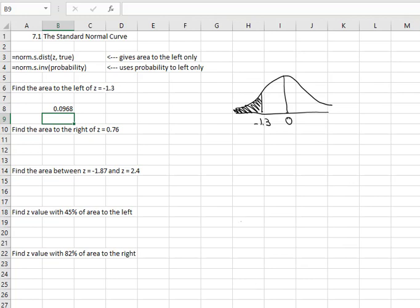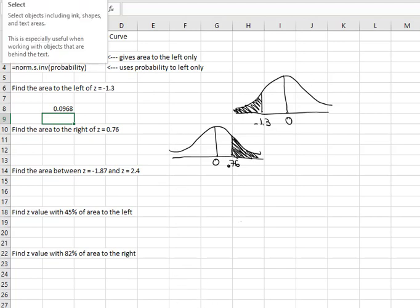Now that's a little different than the next example where I want to find the area to the right of 0.76. So here's my normal curve that I'm sketching on some scratch paper. Zero's in the middle, 0.76 is off to the right of that because it's positive. And I want the area to the right of that z value. The problem is when I use the Excel command, it's going to give me the area to the left. And so what we're going to want to do is use the complement.